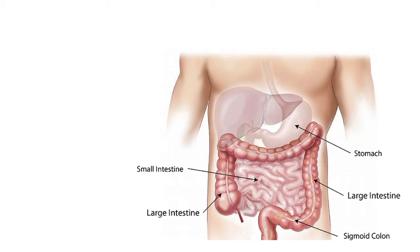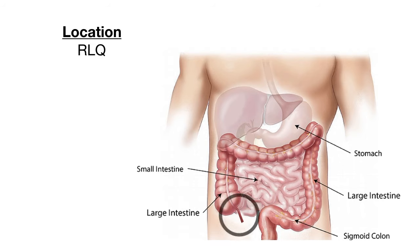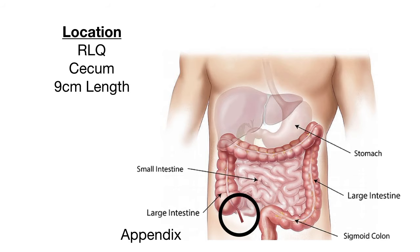The appendix is a tubular structure located in the right lower quadrant of the abdomen at the junction of the small intestine and large intestine. The appendix comes off of the cecum, which is that pouch-like structure at the beginning of the large intestine. On average, the appendix is about 9 centimeters long. The appendix is also referred to as the vermiform process. Vermiform means worm-shaped and that describes that tubular worm-like structure of the appendix.